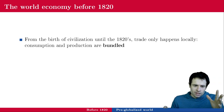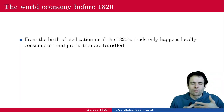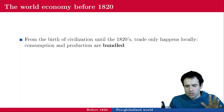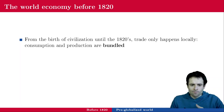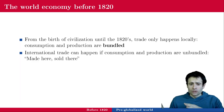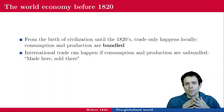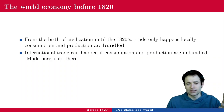In order to understand the world economy as it is today, we need to go back to how the first economies were built and why they were built this way. From the birth of civilization until the 1820s, trade only happens locally. Remember the narrative around those unbundlings — consumption and production are bundled. Where things are made, they are consumed. International trade can happen if consumption and production are unbundled — made here, sold there. Back then, there was no such thing as international; it was more of a local thing.